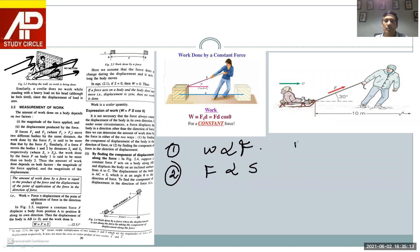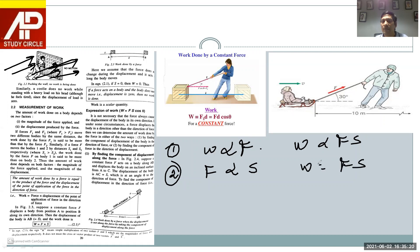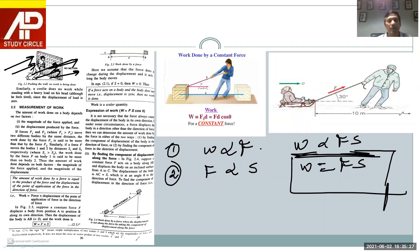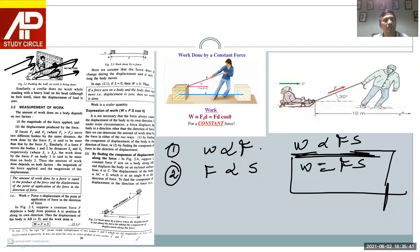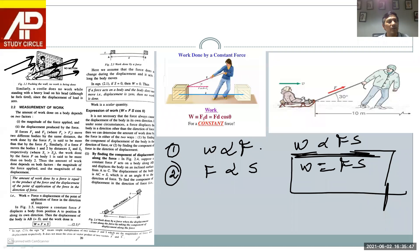Combining these two factors: W is proportional to F × S, so W = F × S. If forces F1 and F2 move two different bodies by the same distance, the work done by F1 is more than by F2 if F1 is greater. Similarly, if a force F moves body 1 and body 2 by distances S1 and S2 respectively such that S1 is greater than S2, the work done on body 1 is more than on body 2.